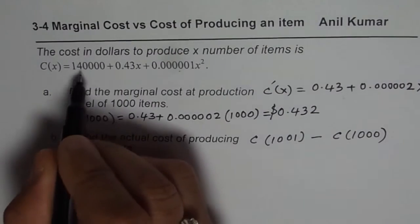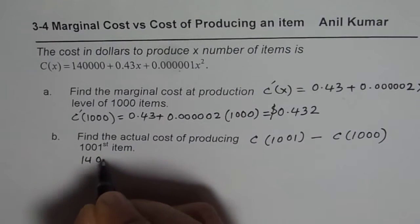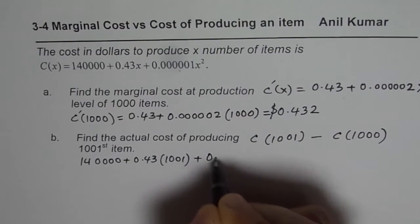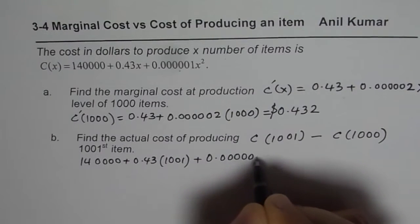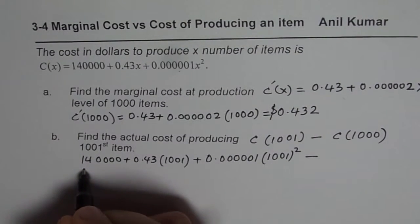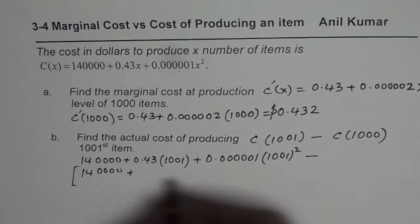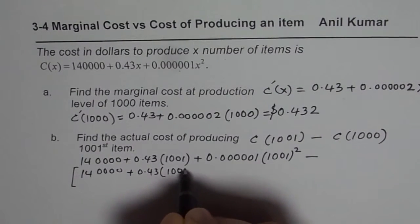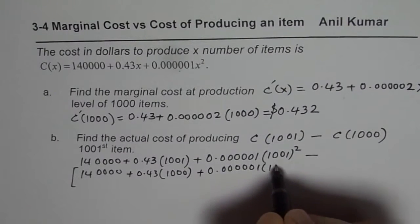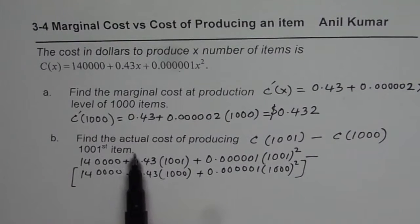So it will be, cost of producing 1001 items will be, in this formula, replace x with 1001. So we get 140,000 plus 0.43 times 1001 plus 0.000001 times 1001 square. Take away this constant cost, take away 0.43 times 1000, plus 0.000001 times 1000 square. So that is what is the cost of producing the 1001st item.